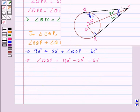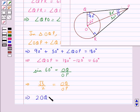So now we can say that sine of 60 degrees is equal to the base, that is OQ, upon the hypotenuse, that is OP. Now sine 60 degrees is root 3 upon 2, which is equal to OQ upon OP, which means that 2 times OQ is equal to root 3 times OP.